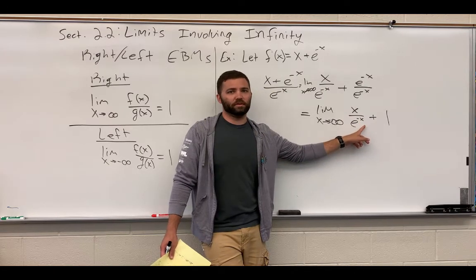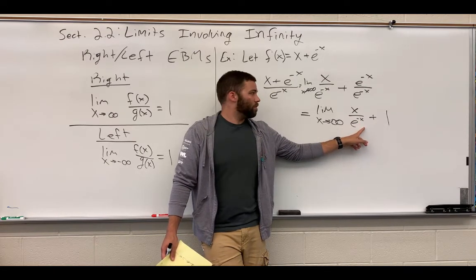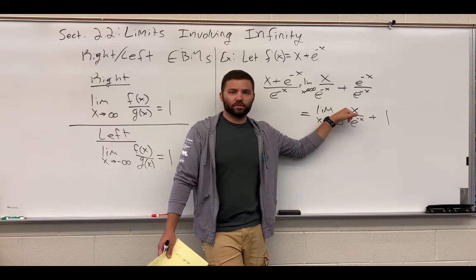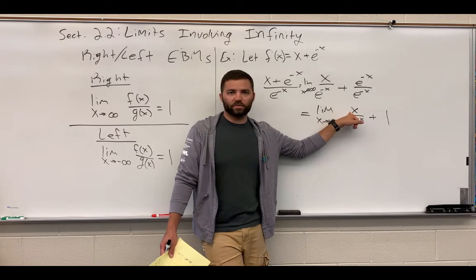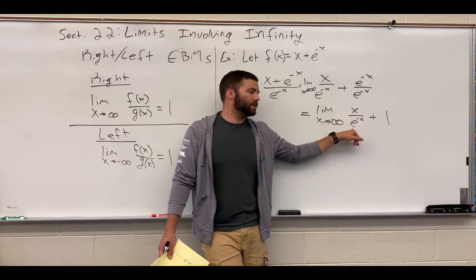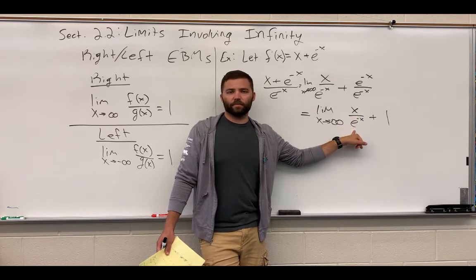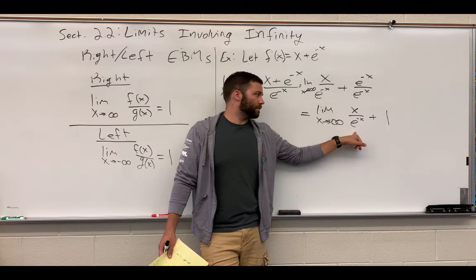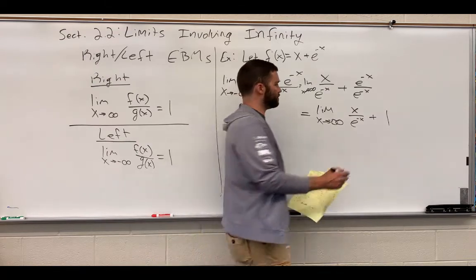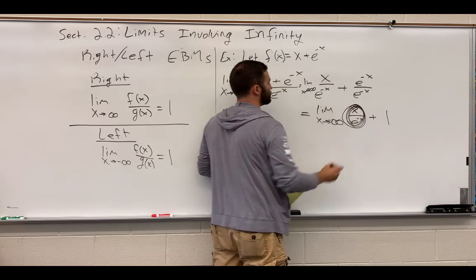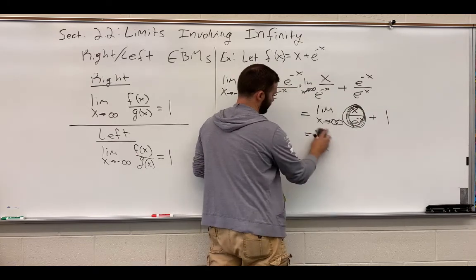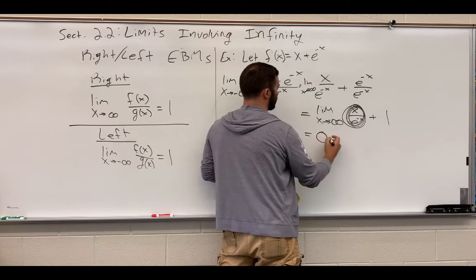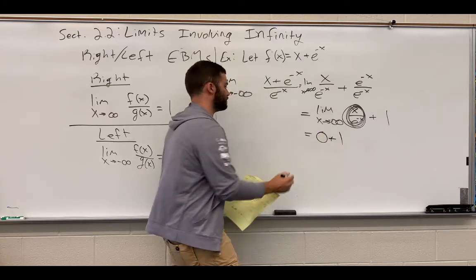What I'm going to have is a linear function that is growing at a decent rate in the negative direction, but it's going to be completely dominated by this exponential function. So this is going to end up going to 0. It's going to be 0 plus 1, which is just 1.